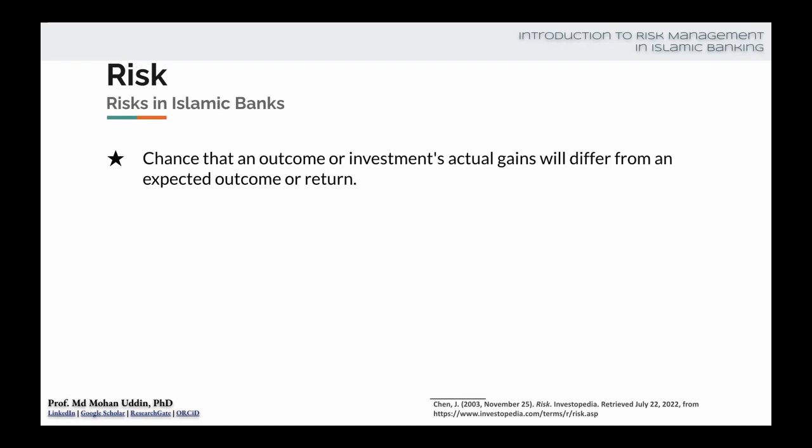By risk, we mean the possibility — or sometimes the probability or the chance — that the outcome of the investment, which is profit, return, yield, or gain, will be different from the expected outcome. For example, we are expecting 15%, but what is the chance that it will be different from 15%? That possible degree of deviation from the expected level of return is called risk.